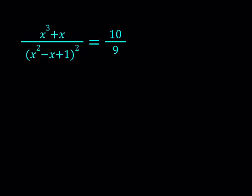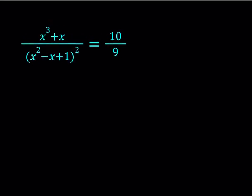Hello everyone. In this video we're going to be solving a rational equation. We have x cubed plus x divided by the quantity x squared minus x plus 1 squared equals 10 ninths, and we're going to be solving for all values of x, real and complex. I'm going to be presenting two methods. Let's start with the first one.